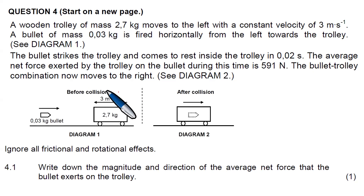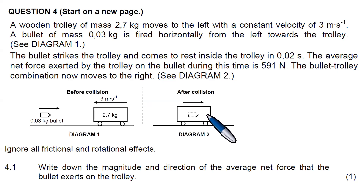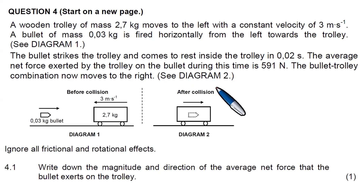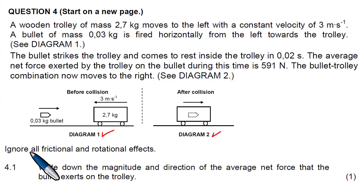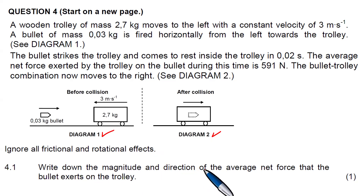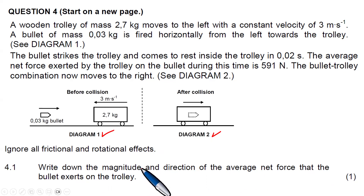The bullet-trolley combination now moves to the right — see diagram 2. Ignore all frictional and rotational effects. The question asks us to write down the magnitude and direction of the average net force that the bullet exerts on the trolley.